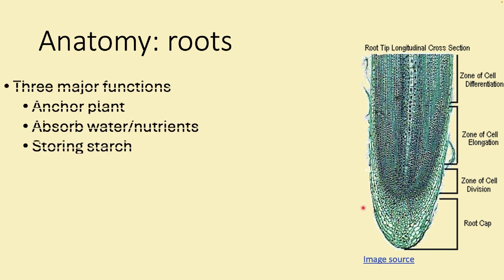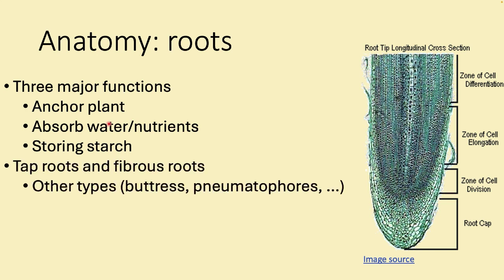Roots anchor the plant in the soil, absorb water and nutrients (ions), and store starch. There are two major types: taproots look like a wedge driven into the ground and are better for food storage; fibrous roots are tangled and better at anchoring. There are also other types like buttress roots, pneumatophores, aerial roots, and vining roots.